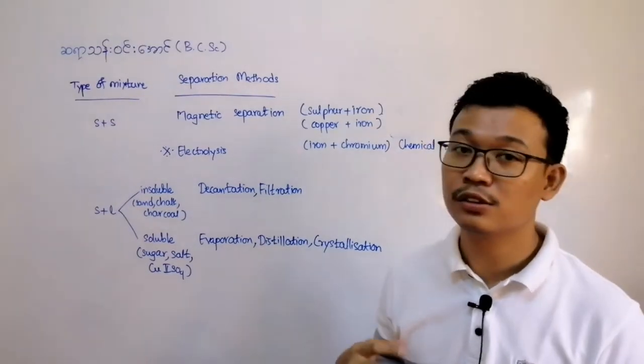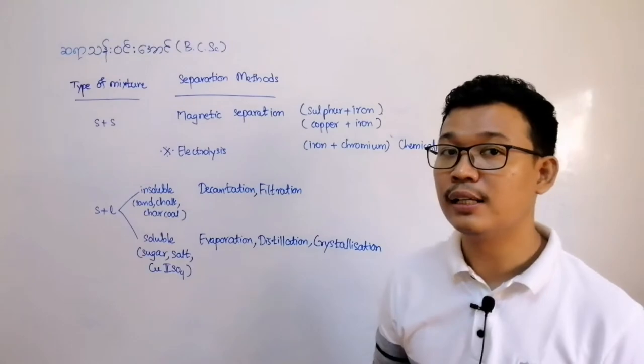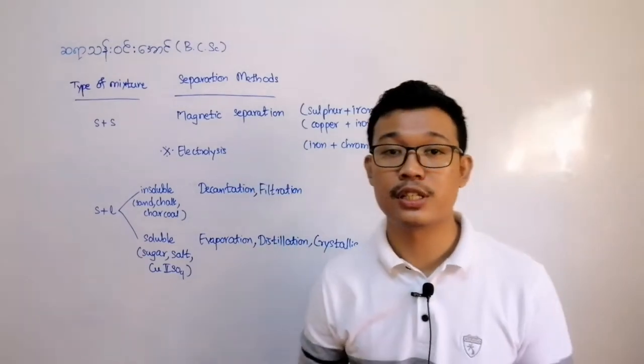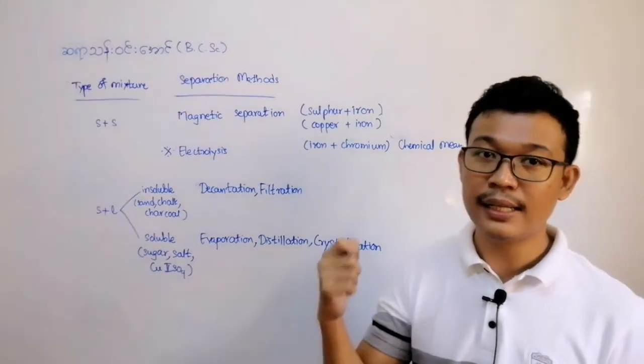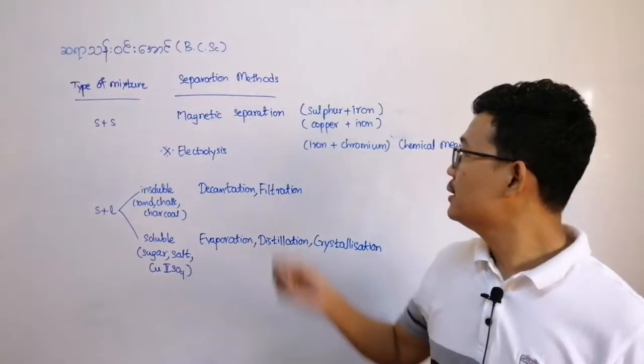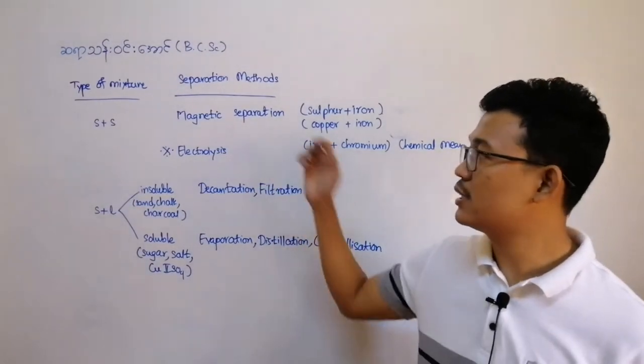For magnetic separation, we can see that iron can be separated from other materials using magnets. This method uses magnetic properties for separation.